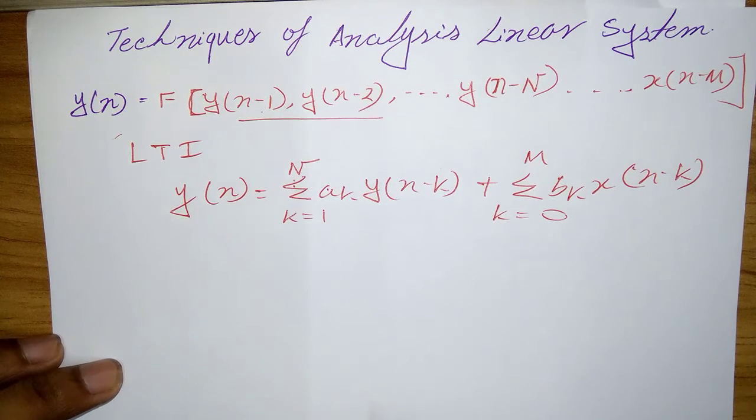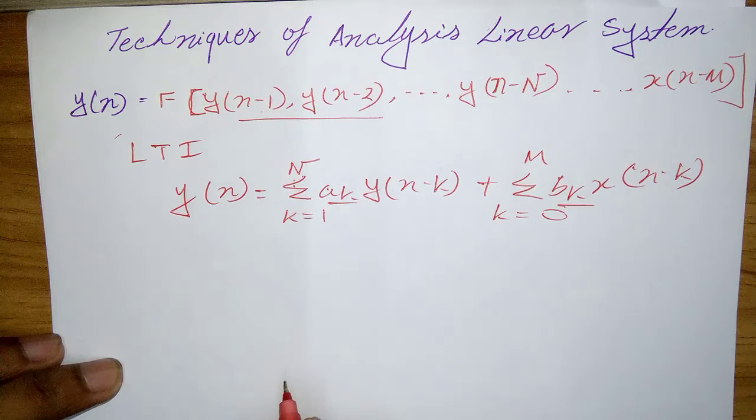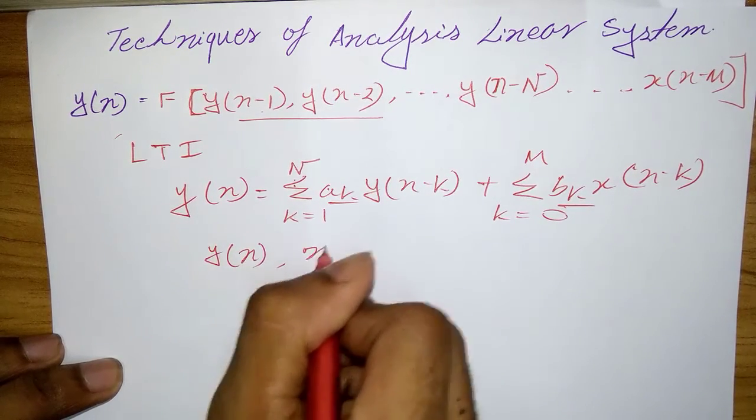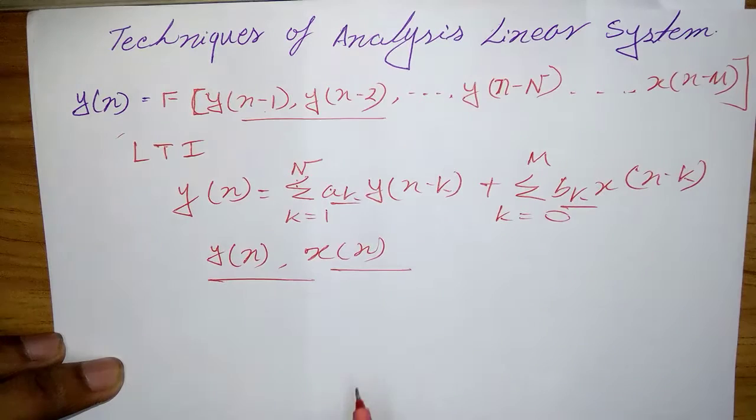Where a_k and b_k are constant parameters that specify the system and are independent of x(n) and y(n).